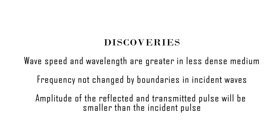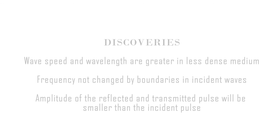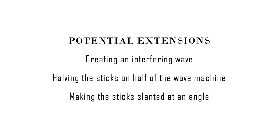In this lab, we discovered that: 1. Wave speed and wavelengths are greater in a less dense medium. 2. Frequency won't be changed by boundaries in incident waves. 3. The amplitude of a reflective and transmitted pulse will be smaller than an incident pulse, because following waves create destructive interference and some energy is lost at the boundaries. A few potential extensions include: 1. Creating an interfering wave. 2. Having the sticks on half of the wave machine. 3. Making the sticks slanted at an angle. In this lab, we have explored how changes made to the wave properties will affect the wave.